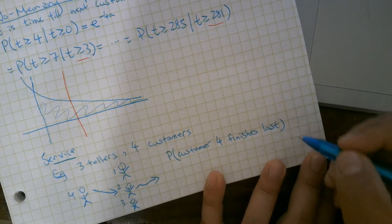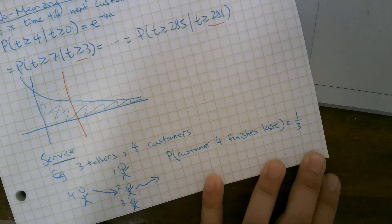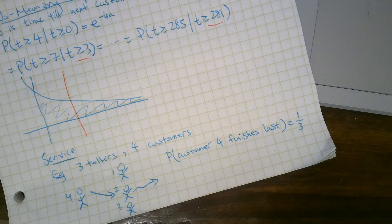Or finish, yeah, finish last. So the probability that customer four finishes last is one-third. We don't care about the guy who's going to finish first, but after that, all three can finish equally.